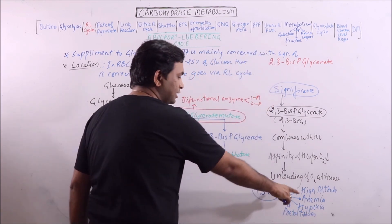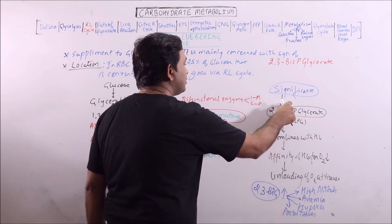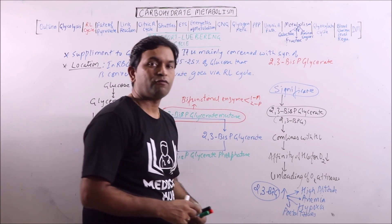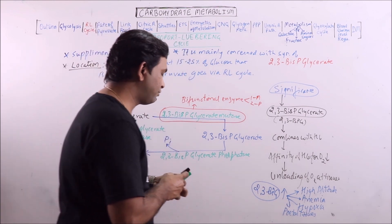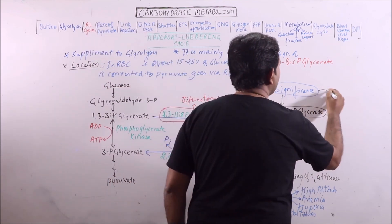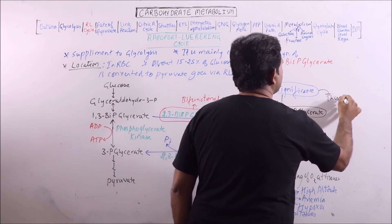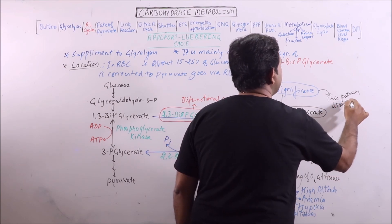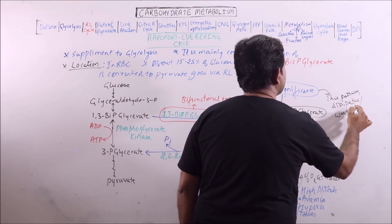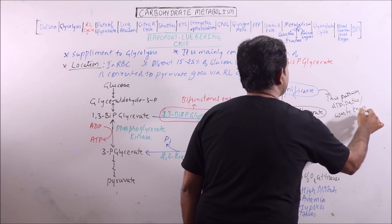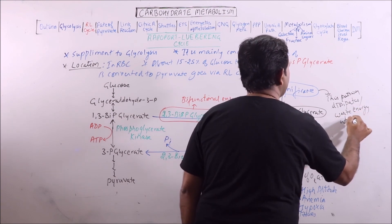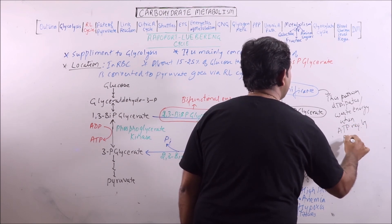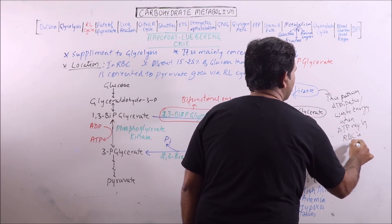It means in such conditions, 2,3-bis-phosphoglycerate increases in RBC to ensure more delivery of oxygen to the tissues. Another significance is that this pathway dissipates or wastes energy when ATP requirement by RBC is minimal.